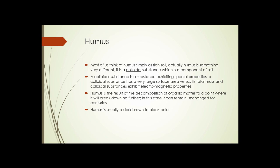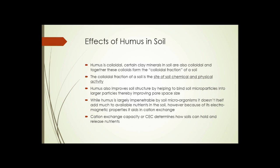This is important, as we'll see in a later slide. Humus is the result of the decomposition of organic matter to a point where it can be broken down no further. In this state, it can actually remain unchanged for centuries. Humus is usually a dark brown to black color in the soil.